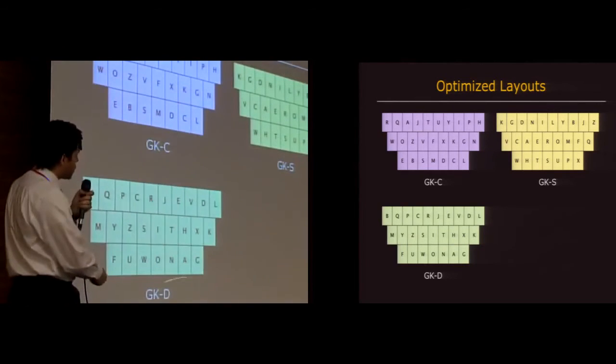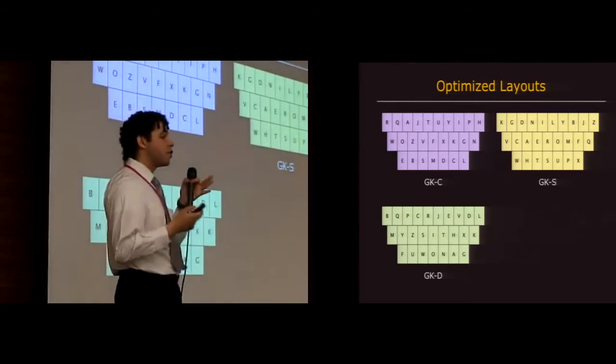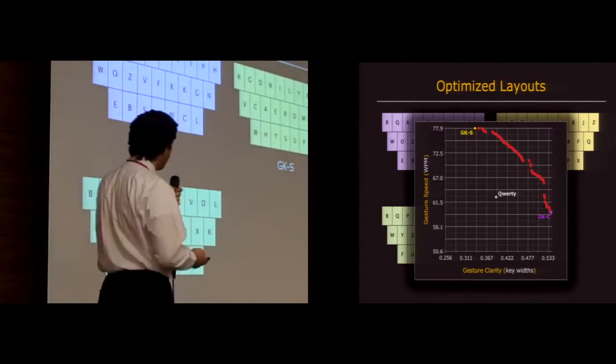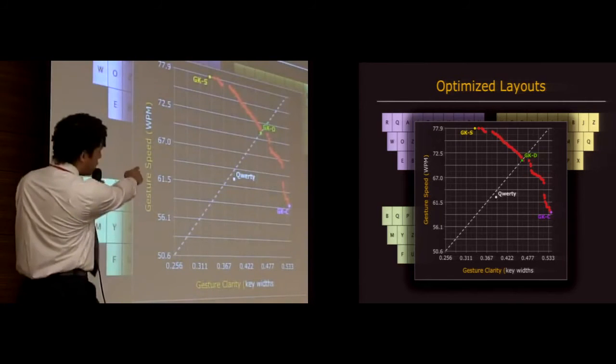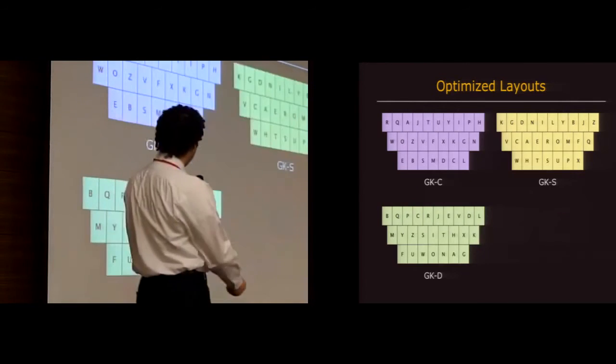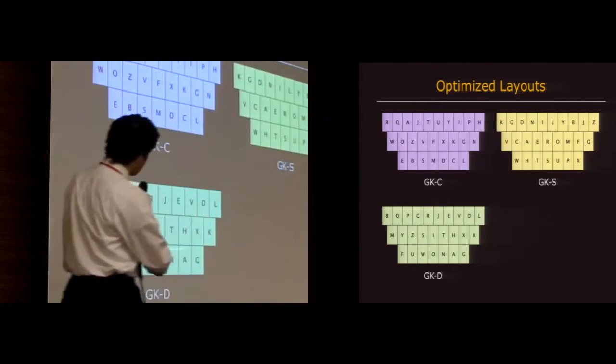Next is GKD, which is the double optimized layout, which is a sort of compromise between clarity and speed. So that one we chose by finding the point nearest the 45 degree line here. And so this one I call the SIF layout.